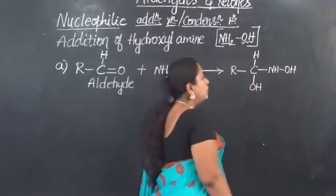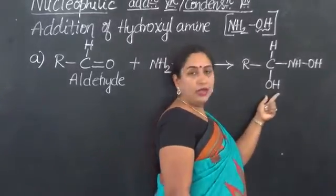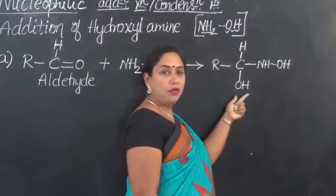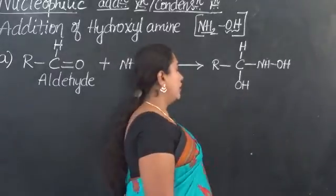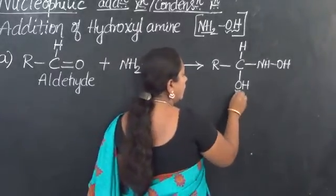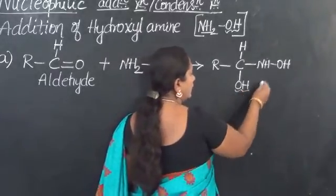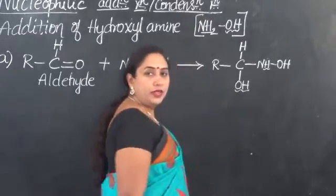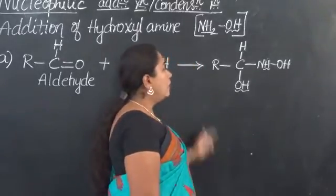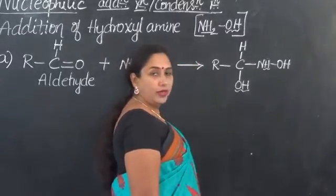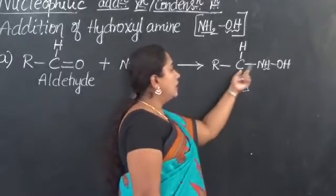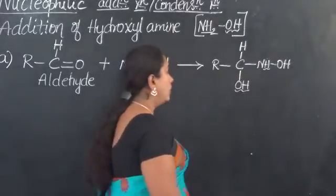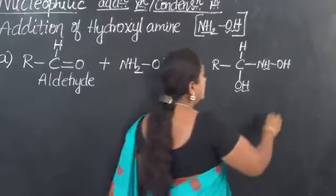This addition compound will further undergo condensation — that means it will eliminate a molecule of water. OH from the carbon side will react with the hydrogen linked with nitrogen, and they go out as water. Therefore, carbon and nitrogen will be linked by a double covalent bond.